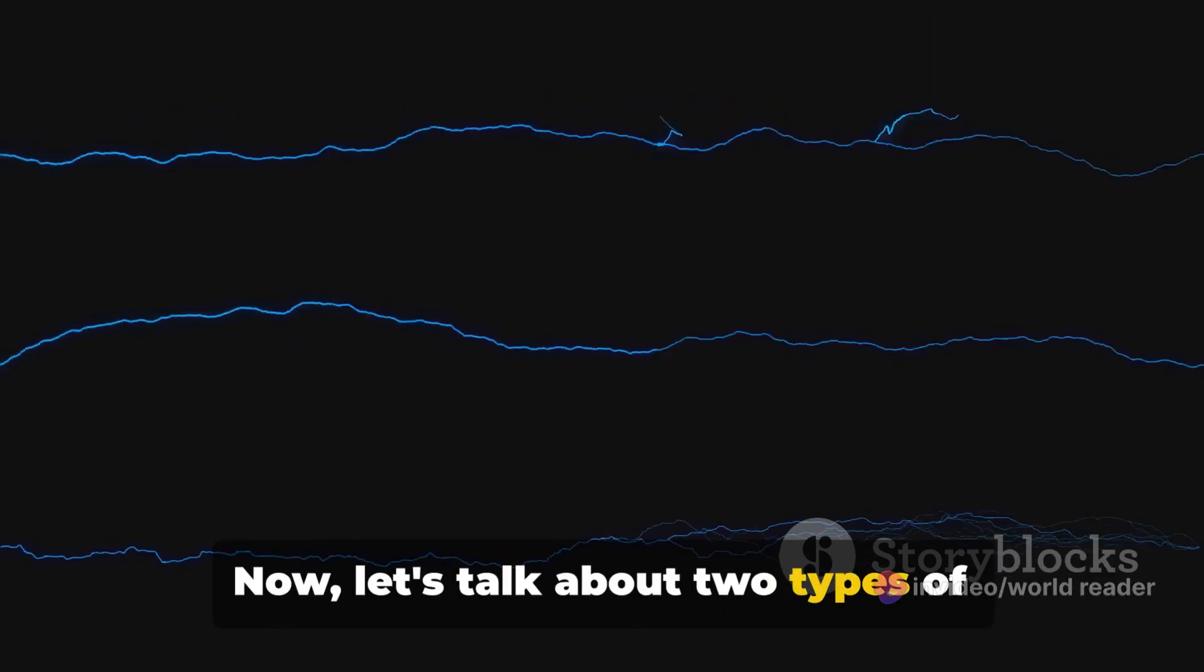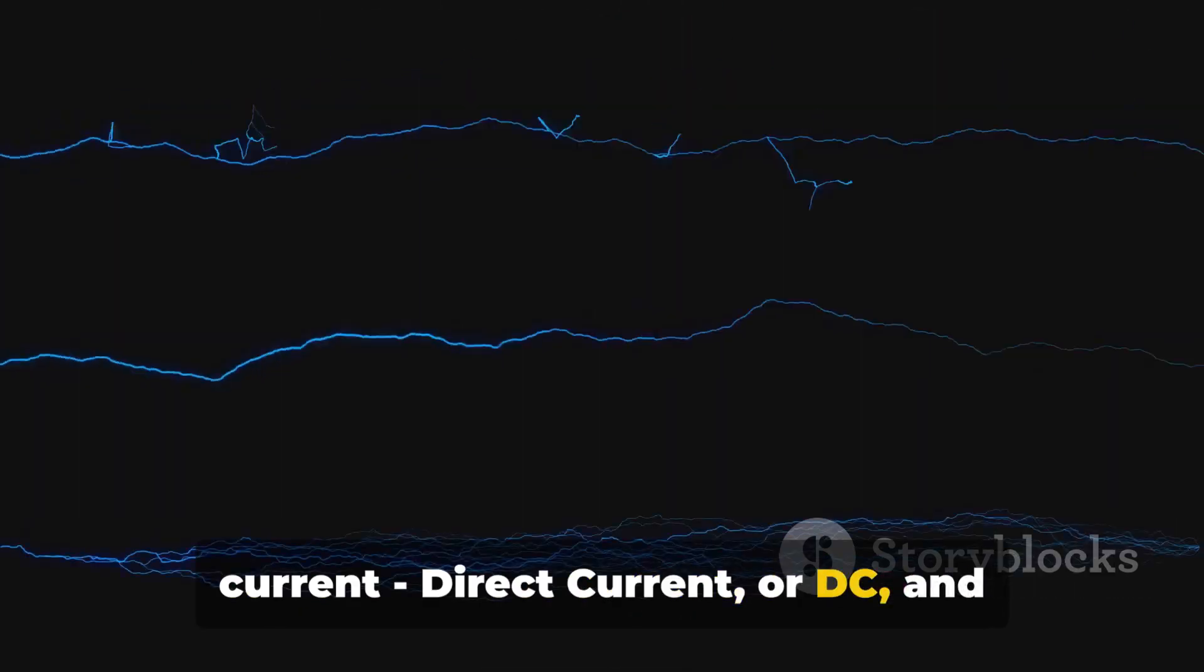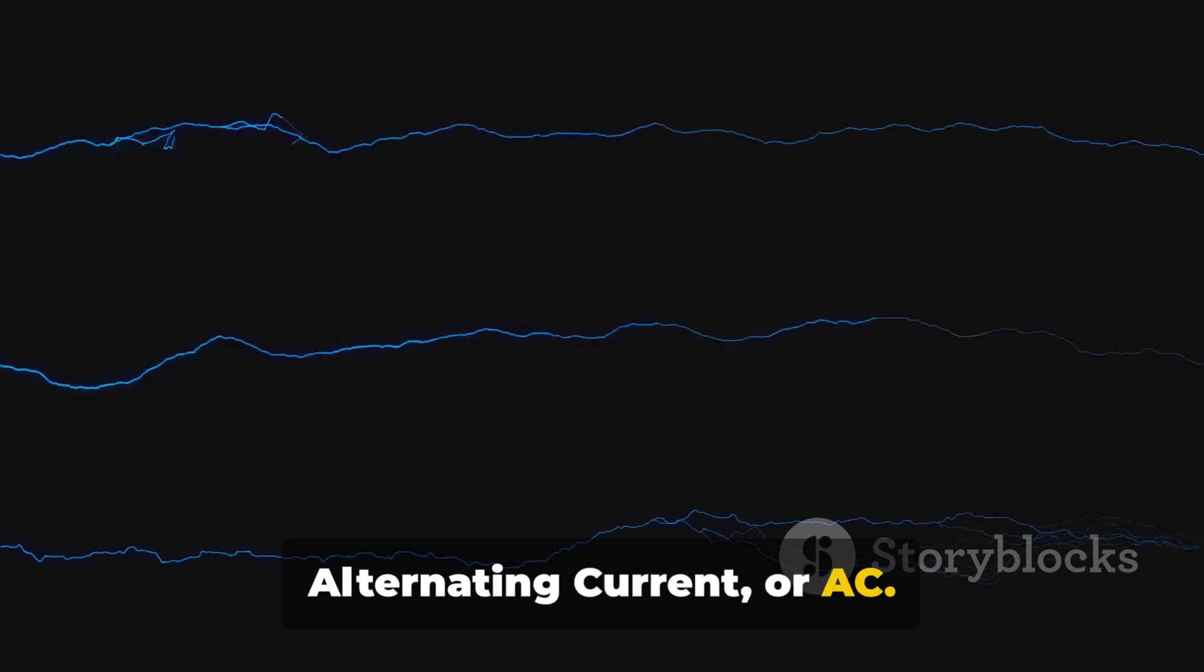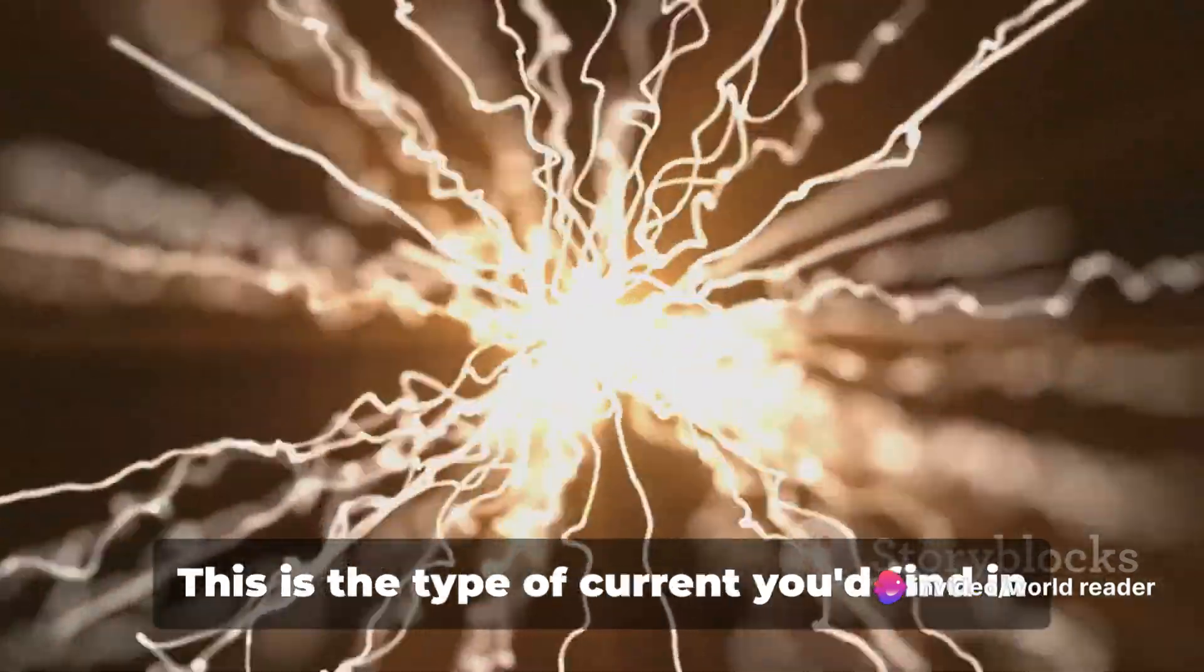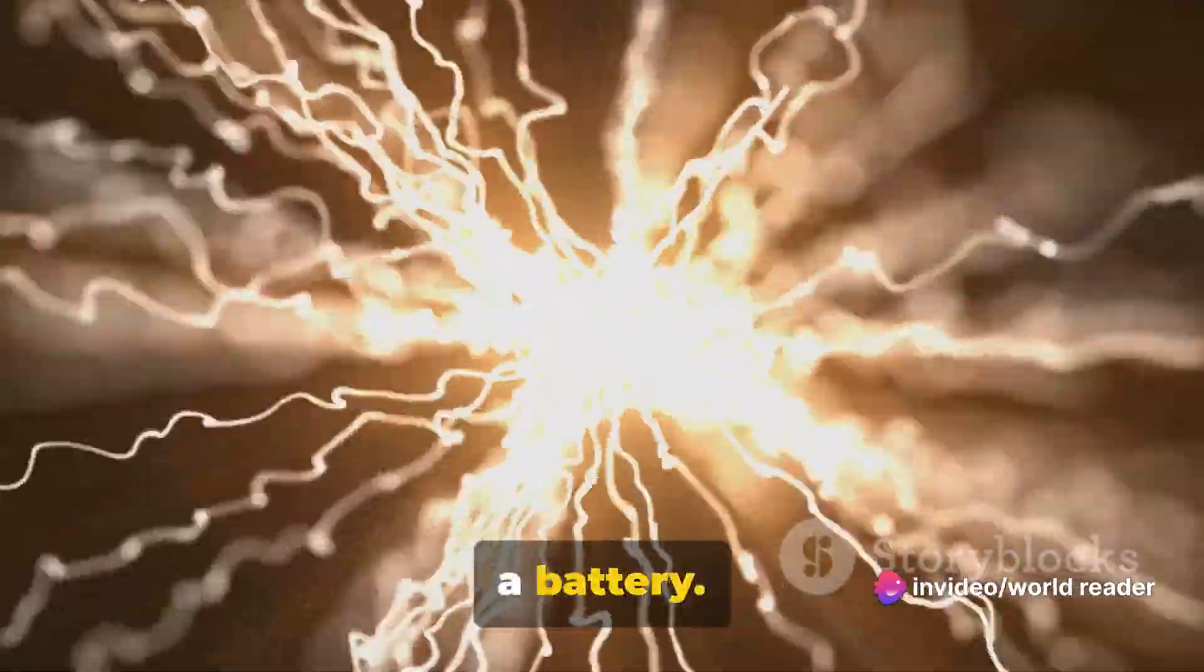Now, let's talk about two types of current: direct current or DC, and alternating current or AC. DC is like a one-way street. The current flows in one constant direction. This is the type of current you'd find in a battery.